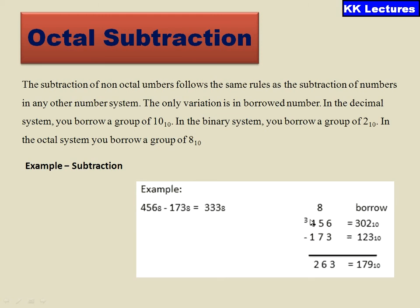If I borrow 1 from here, I will be getting a borrow of 8 such that 8 plus 5 is 13, 13 minus 7. So 13 minus 7 is 6, and 3 minus 1 is 2. So the resultant is 263.